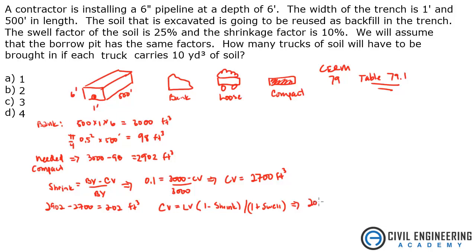So the difference here we got 202 equals loose volume times one minus the shrinkage which is 0.1 divided by one plus 0.25, 25 percent and solve for the loose volume. I get 280.6 cubic feet.